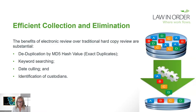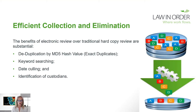What if you've still got hard copy in your review? All those documents can be scanned and put through OCR — optical character recognition — so you can still search them. They can then be objectively coded, meaning all those documents will be electronically searchable and you'll be able to look at the date, the title, who it's to and from, and review the content. So you don't have to worry about doing a separate hard copy review.